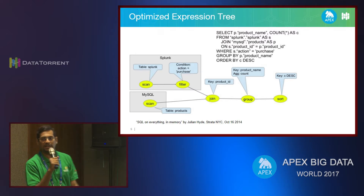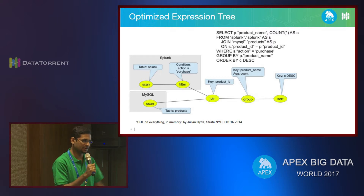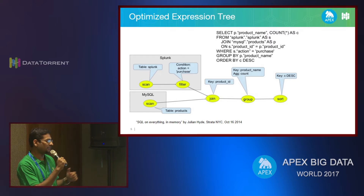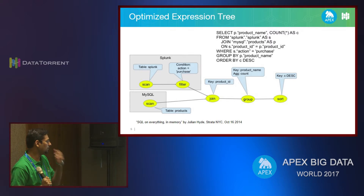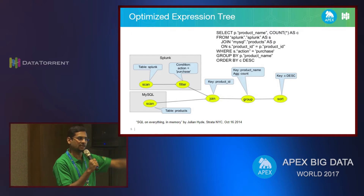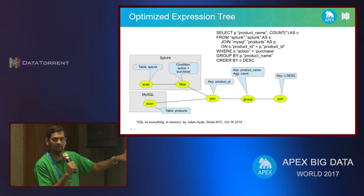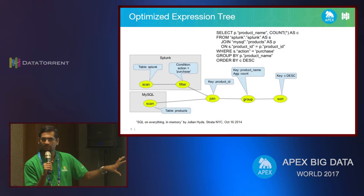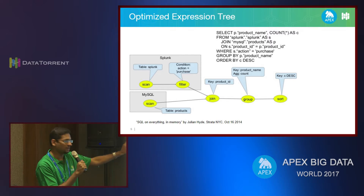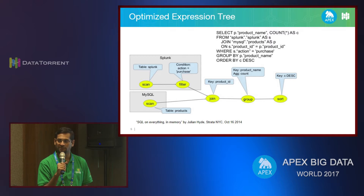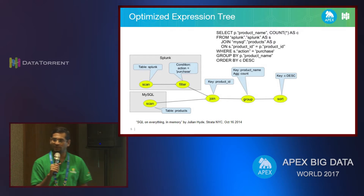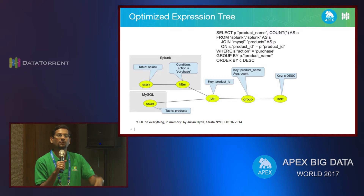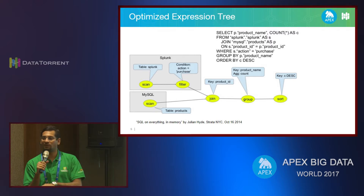It's cost-based — there are rule-based and cost-based optimizers, but cost-based is the default. Now, the relational algebra output from Calcite looks similar to an Apex DAG structure. If I can replace individual stages with Apex operators, my work is done. If this is the output of Calcite, I can take the join stage and replace it with a join operator. That is how we leverage Calcite to provide a SQL interface for Apache Apex.